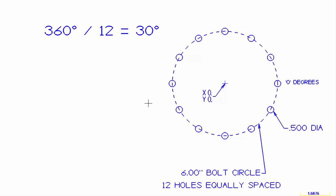Now we know that a circle is 360 degrees, so if we divide it by 12 equal spaces we come up with 30 degrees between each hole. The first hole right here at 3 o'clock is at 0 degrees, and we're going to work our way in a counterclockwise direction as we calculate the x and y coordinates of each bolt hole.